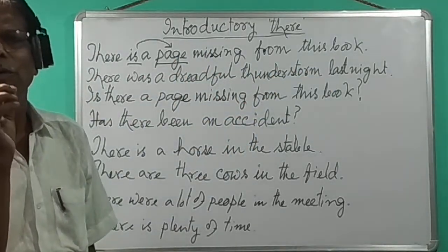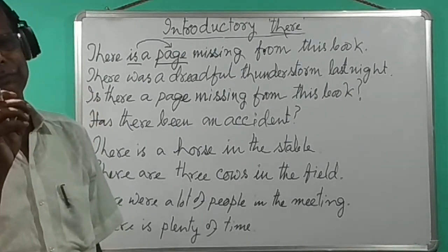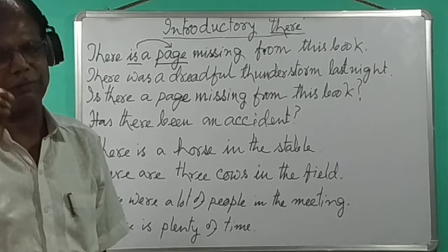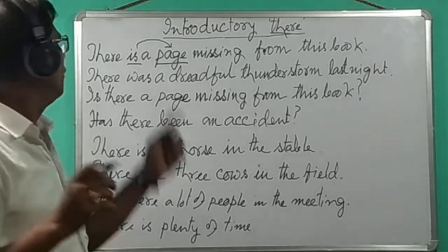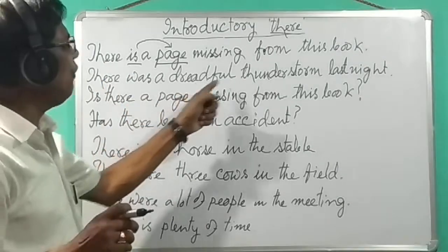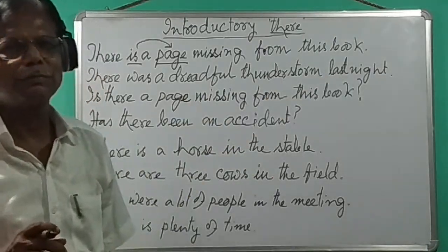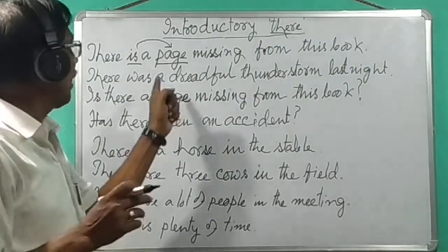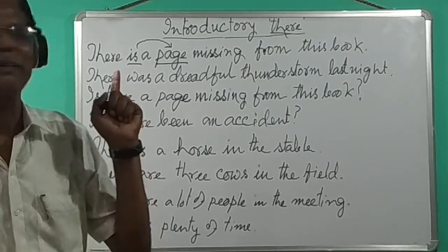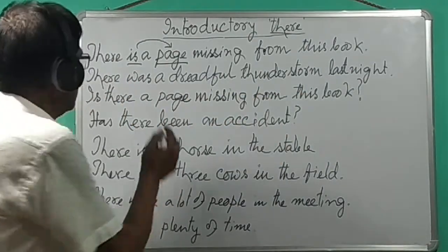So when we cannot introduce the sentence with the subject first, we use introductory 'there'. For example: 'There was a dreadful thunderstorm last night.' Note that 'there' here has no meaning of its own — it is just introductory.